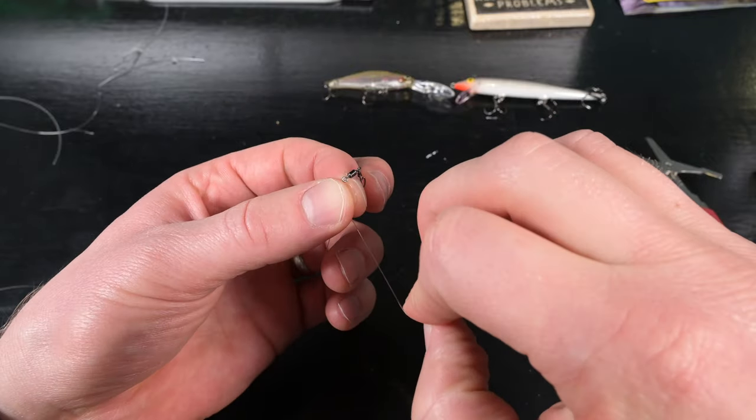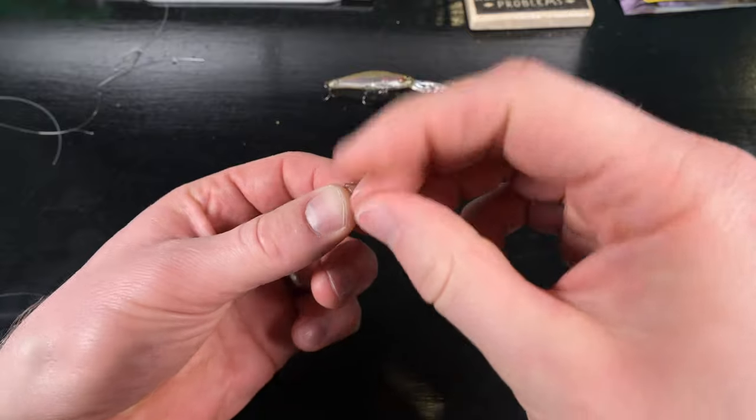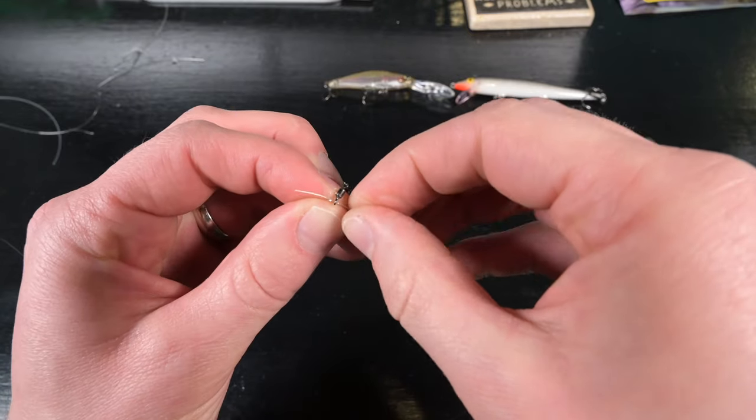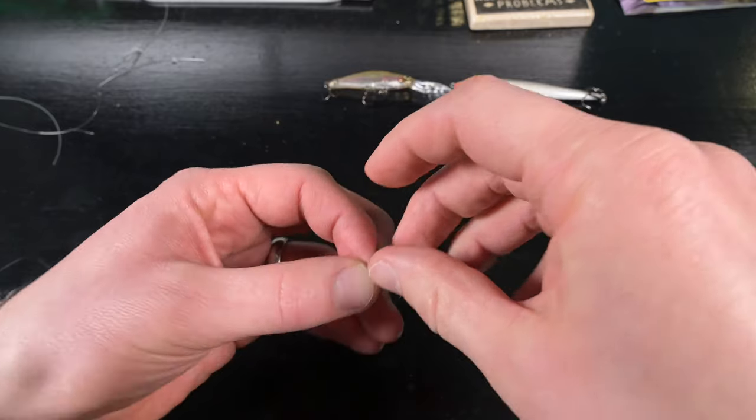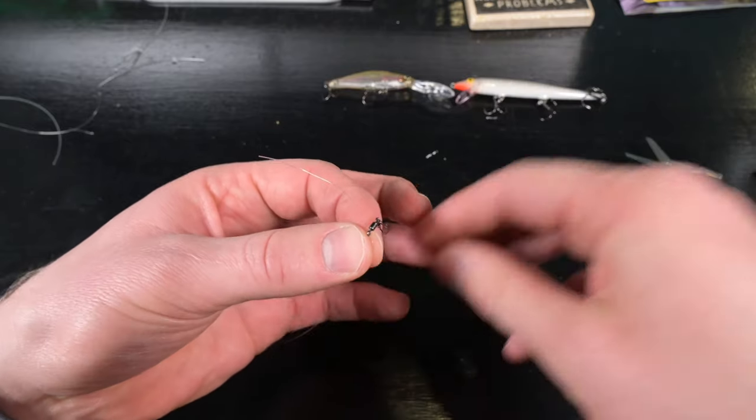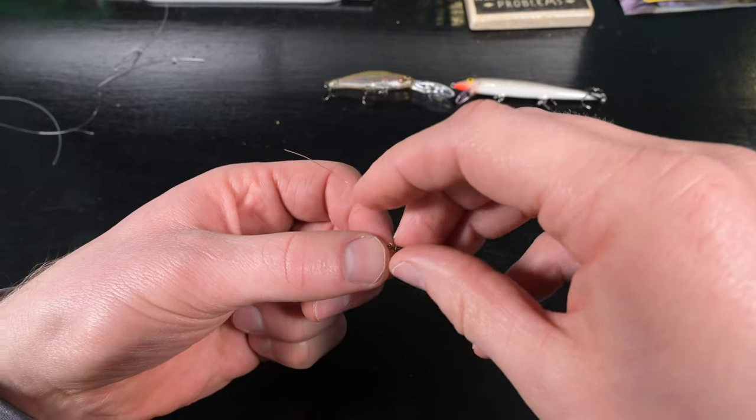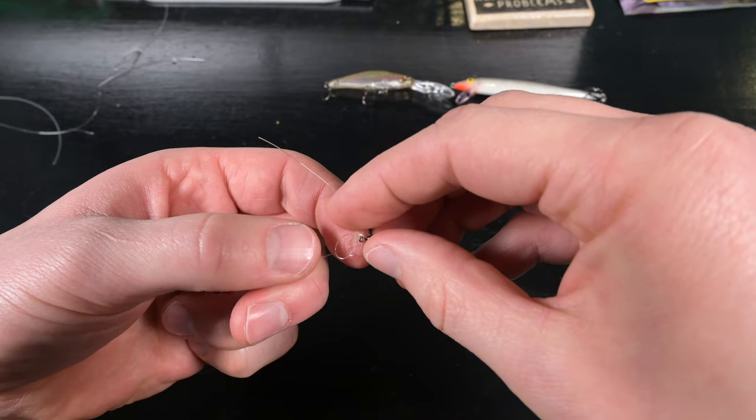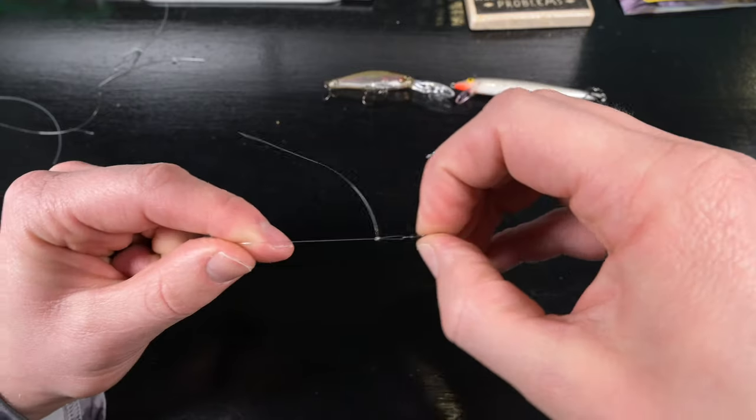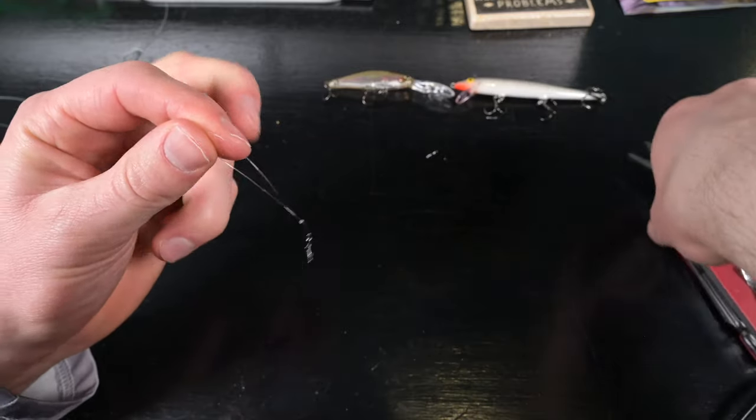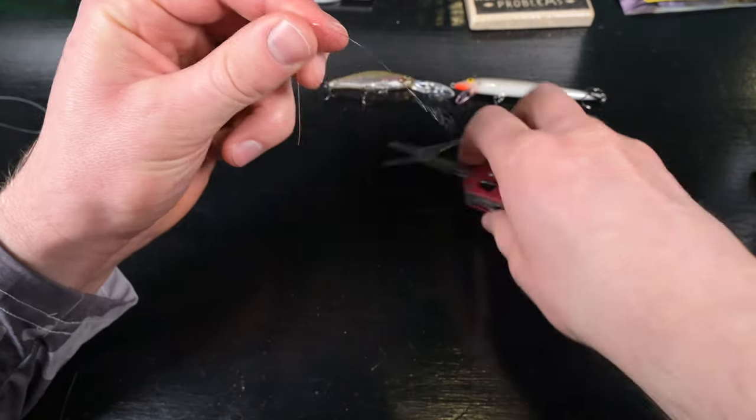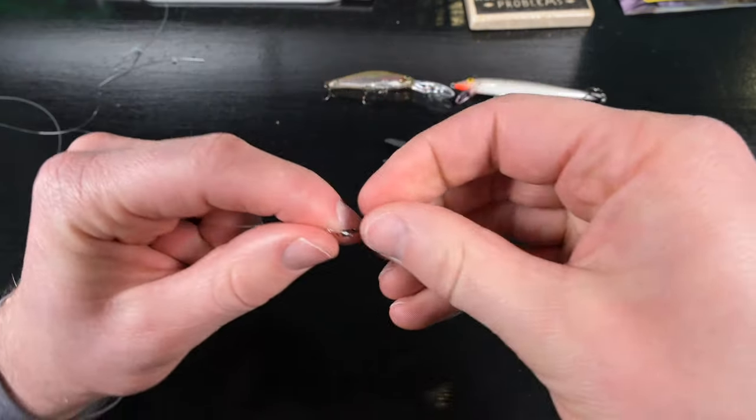You want swivels for spoons because spoons spin, and if you didn't have a swivel, your line wouldn't be able to compensate for all the twist and you'd get really bad line twist. Swivels are a great way to prevent line twist, and they allow you to swap out lures on the fly super quickly. I run this most of the time when I'm out trolling for trout.